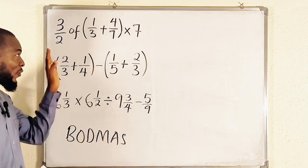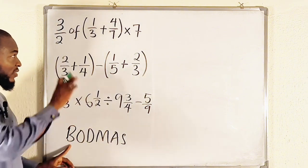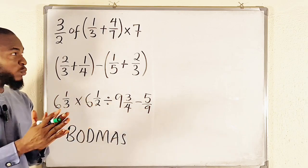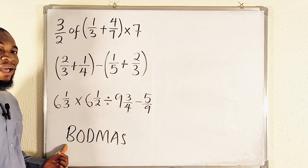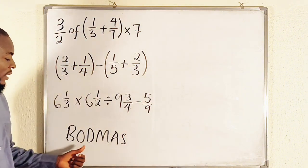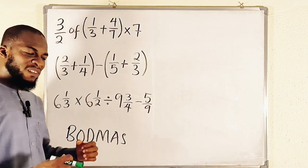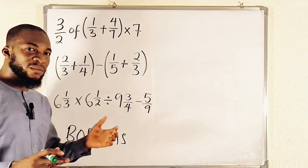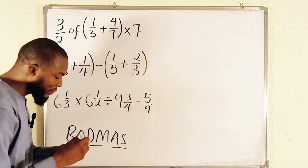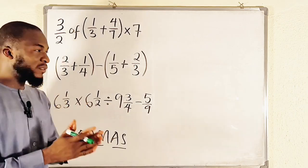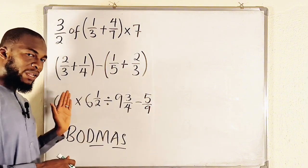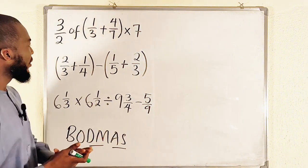This means that you have to follow them in order from left to right when simplifying fractions or numerical expressions connected with different operations. You start with brackets if available, followed by orders, then division and multiplication. You should know that division and multiplication have the same power, so you start with whichever comes first from left to right. Likewise, addition and subtraction — always start with whichever comes first from left to right.